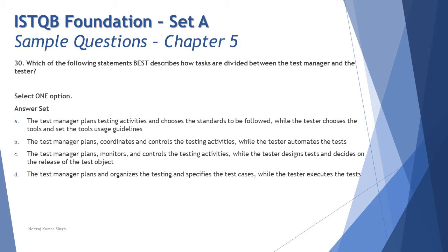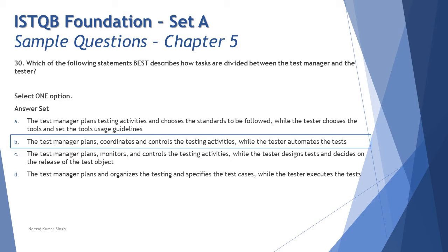Option C: the test manager plans, monitors, and controls the testing activities while the tester decides on the release of the test object. We have a separate release management team for that — the tester does not have responsibility for deciding on the release of a test object. Option D: the test manager plans and organizes testing and specifies the test cases — that's wrong, because it's the tester who specifies test cases. So the right answer is B.